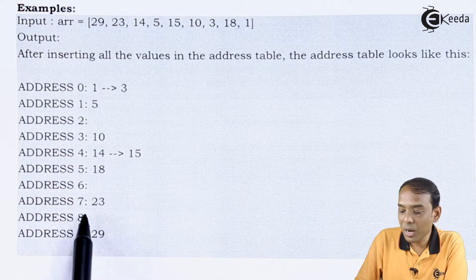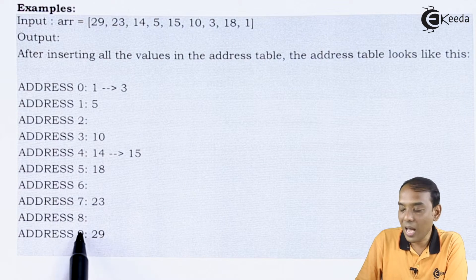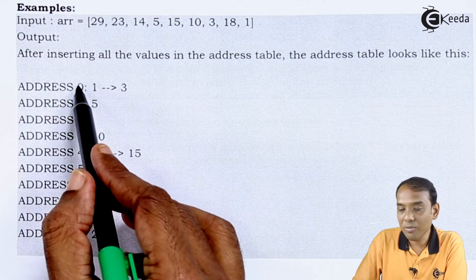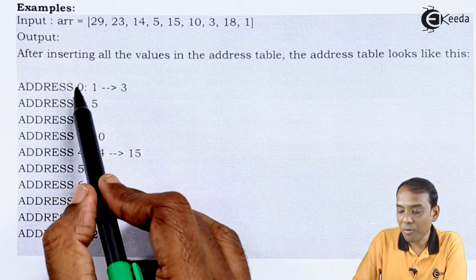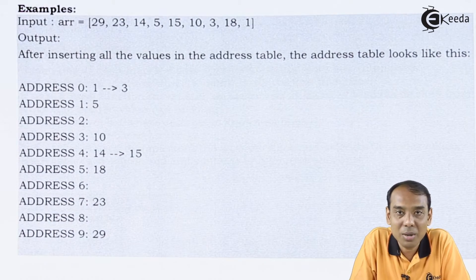Then I move to address number 8, again the null value. Then I move to address number 9, which is going to give me the value called as 29. Since I have considered the size of the address table as 10, I am going to start from 0 till 9. That is the size of the address table.